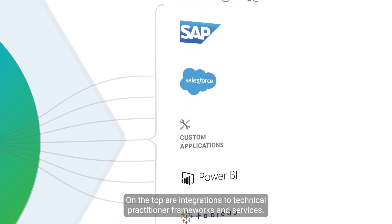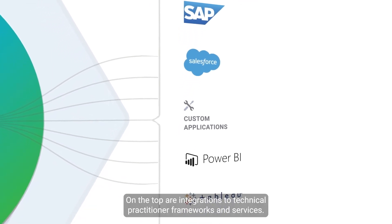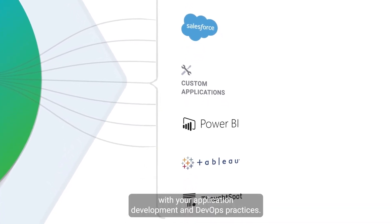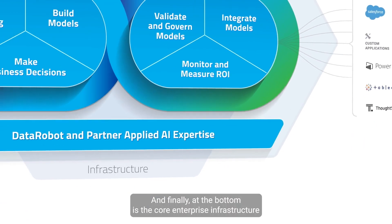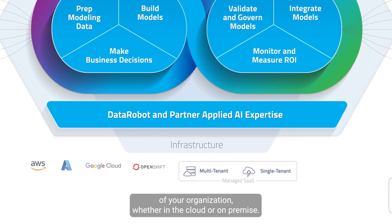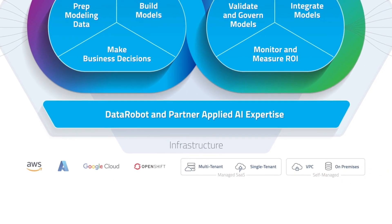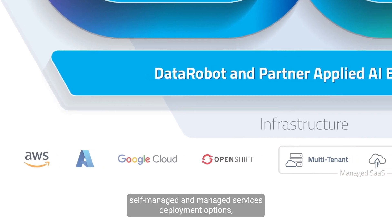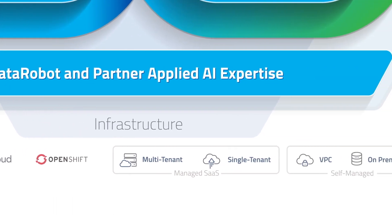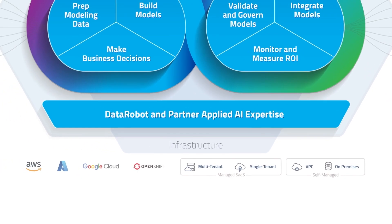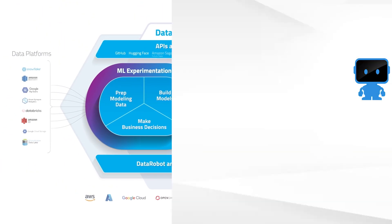On the top are integrations to technical practitioner frameworks and services. The platform extends your existing tools to be fully compliant with your application development and DevOps practices. At the bottom is the core enterprise infrastructure of your organization — whether in the cloud or on-premise — supporting all the major cloud vendors and allowing for both self-managed and managed services deployment options. DataRobot.ai platform supports the broadest range of infrastructure.